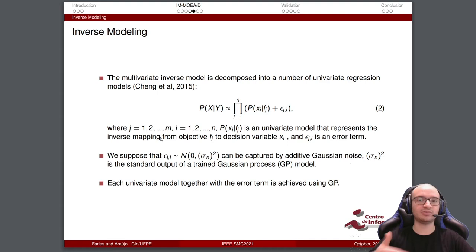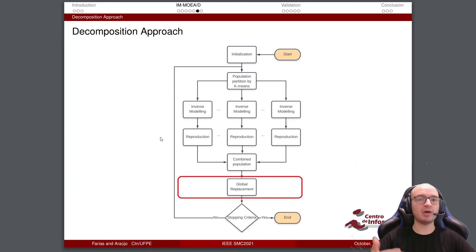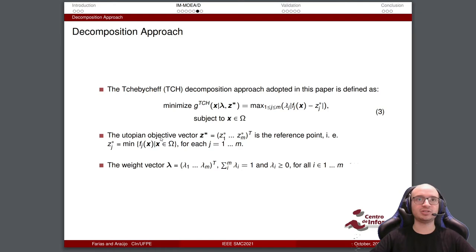We need now a selection step and the next step is the global replacement. For this step, we adopt the decomposition approach of Tchebycheff. This approach is defined by this equation, where the objective is minimizing the Tchebycheff decomposition, taking the maximum or the worst value of this situation, where we have the weight vector lambda, the utopian objective vector z that is the reference point, and the solution x.